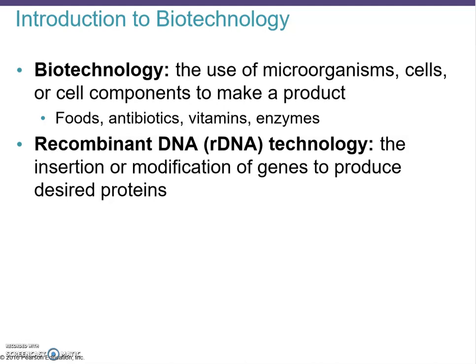Recombinant DNA technology is the insertion or modification of genes to produce desired proteins. A good example is the manufacturing of recombinant human insulin and other protein hormones using E. coli. These recombinant products are identical to human insulin, which is a big advantage.